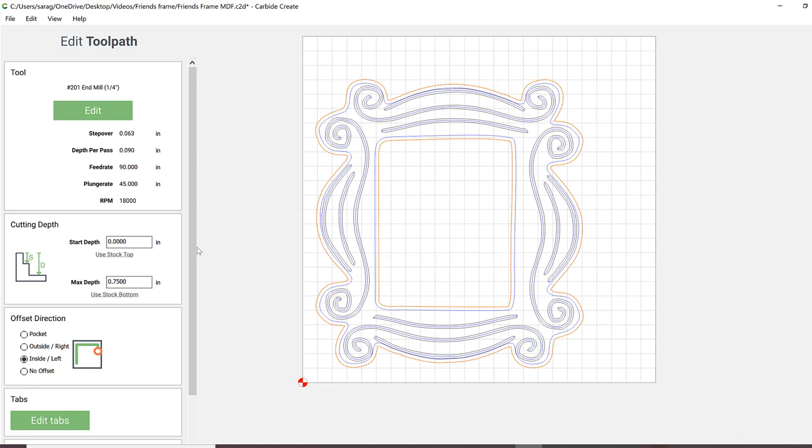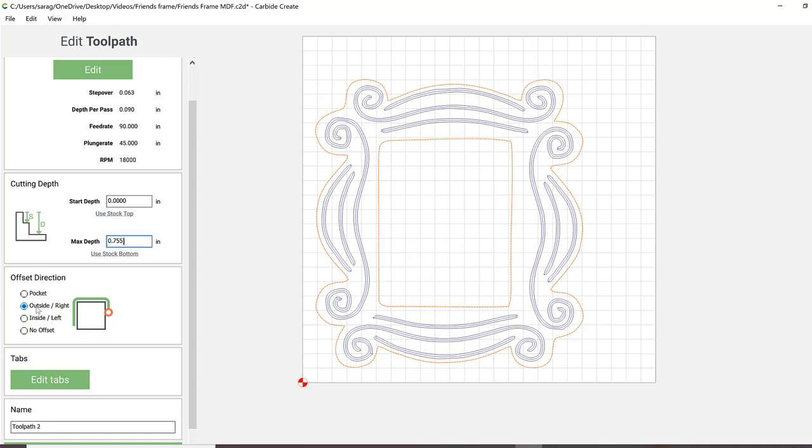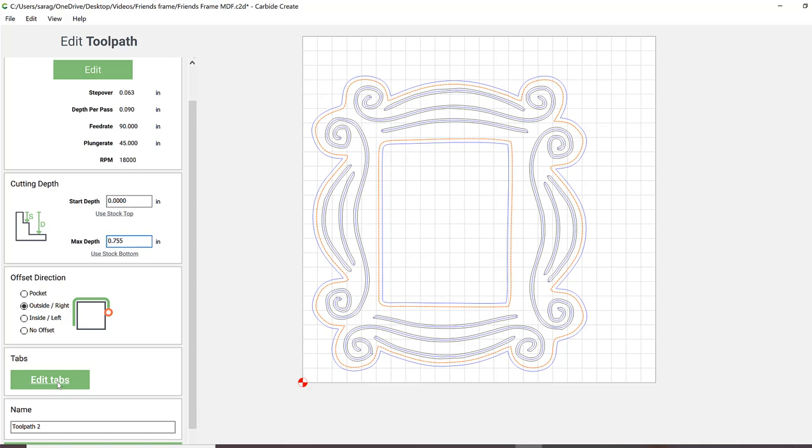Something important to pay attention to is the offset direction. Because I want to cut around the detail that was previously created, I selected the outside right option. You can see how the different options could affect the toolpath. Take a look at the blue line that goes from the inside of the border when inside left is selected to the outside of the border when outside right offset direction is selected. Make sure to create tabs for both the inside and outside of the frame to prevent any material from shifting or jumping while the machine is running.